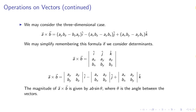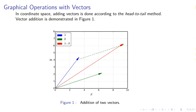Operations on vectors continued. We may consider the three dimensional case of the cross product. A cross B has i-hat, j-hat, and k-hat components. We may simplify remembering this formula if we consider determinants. We can subdivide the determinant into the sum of three two-by-two determinants.